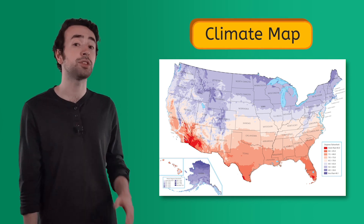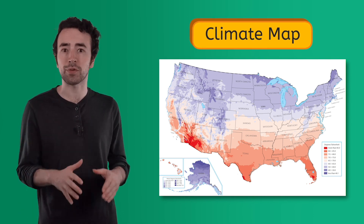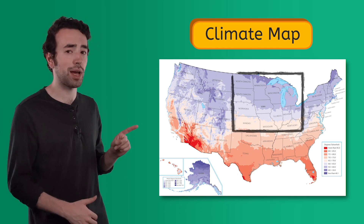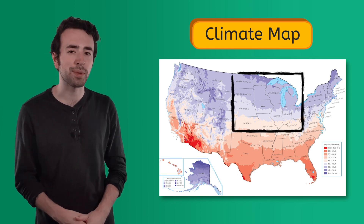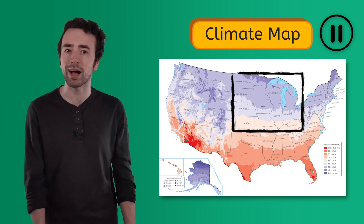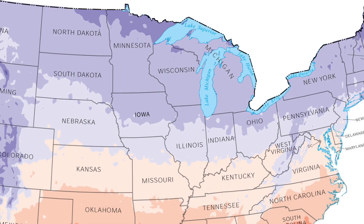A climate map provides information about the general weather of an area, like temperature or humidity. This map helps us understand the kind of weather a place usually experiences. This climate map of the United States shows that different regions experience different temperatures. Take some time to focus on the Midwest and learn about this region's climate. Pause the video and complete page 5 of your PDF. This climate map shows me that in the Midwest, the average temperature is between 40 degrees and 70 degrees Fahrenheit. The Midwest has both cold and warm days.